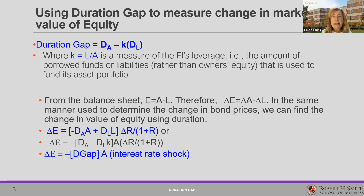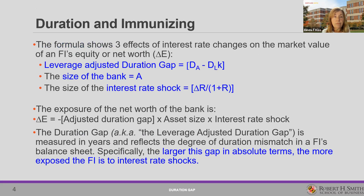In market value terms, if there is an interest rate shock, the change in the market value of equity is minus the duration gap times the asset size times the interest rate shock. The formula shows three items affect changes in equity or net worth: the leverage-adjusted duration gap (D_A minus D_L times K), the size of the bank's assets, and the size of the interest rate shock — the change in interest rates divided by one plus the interest rate. The duration gap is measured in years and reflects the degree of mismatch in a bank's balance sheet.